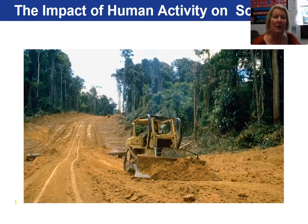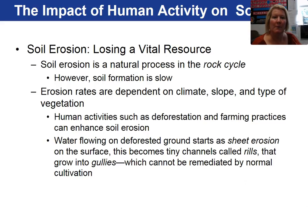An example of clearing of the Amazon rainforests is an unfortunate situation. Remember, soil is a non-renewable resource, and when we lose it because of poor practices, we are losing a vital resource.